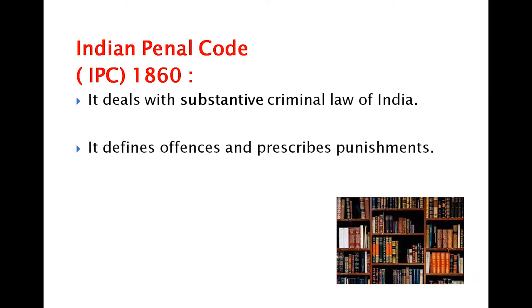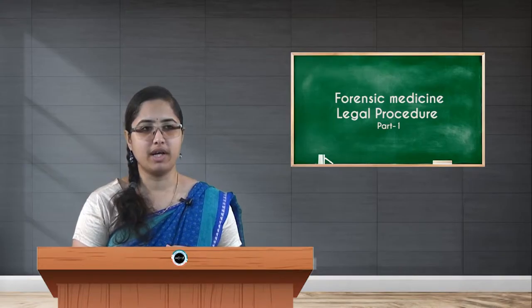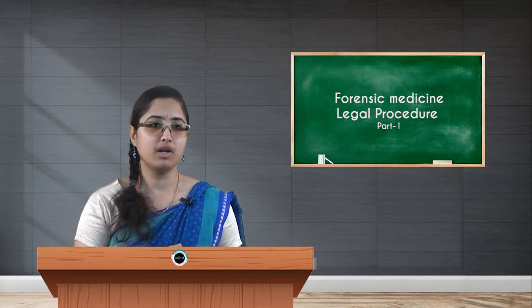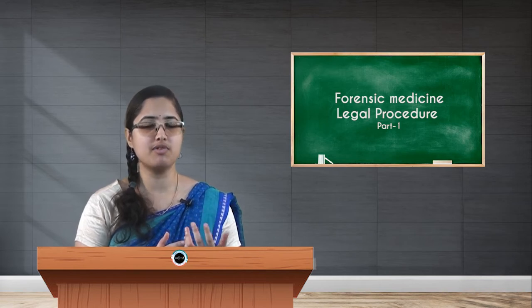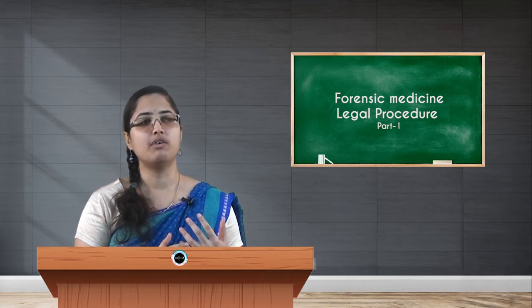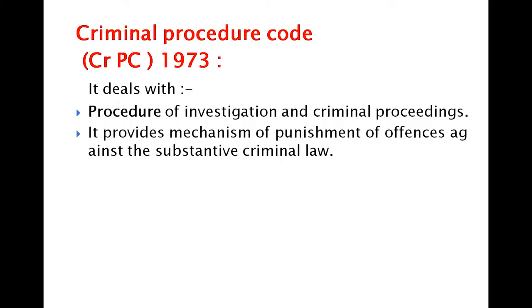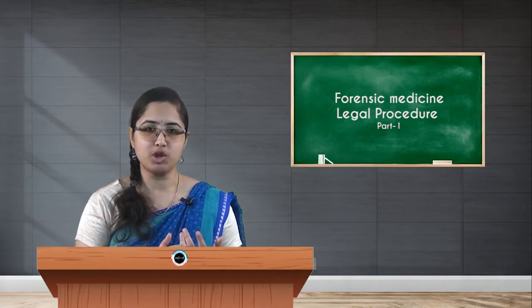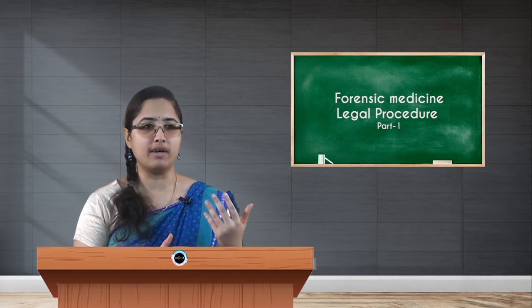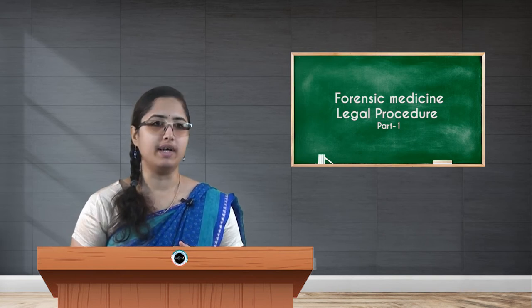The Indian Penal Code was formulated in 1860 during colonial rule. It deals with the substantive criminal law of India, meaning the depth and volume of law and order written in the country. It defines crime and the offenses which mandate punishment. There is also the Criminal Procedure Code, or CRPC, formulated in 1973, which deals with the procedure of investigation and criminal proceedings.